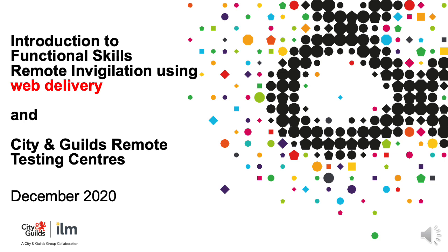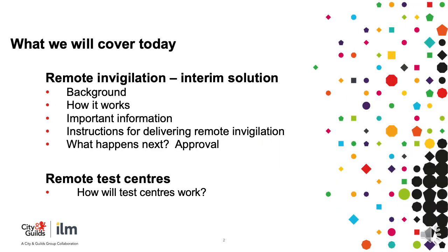Welcome to this webinar in which we'll introduce you to our Interim Remote Invigilation Solution for Functional Skills. I hope it'll give you a good overview of the solution and help you understand how to move forwards with it if you feel it would help you and your learners. During the webinar we'll cover the Interim Solution for Remote Invigilation, providing some background, explaining how it works, and covering key requirements, expectations and instructions. We'll also spend a couple of slides at the end looking at our new remote test centres.